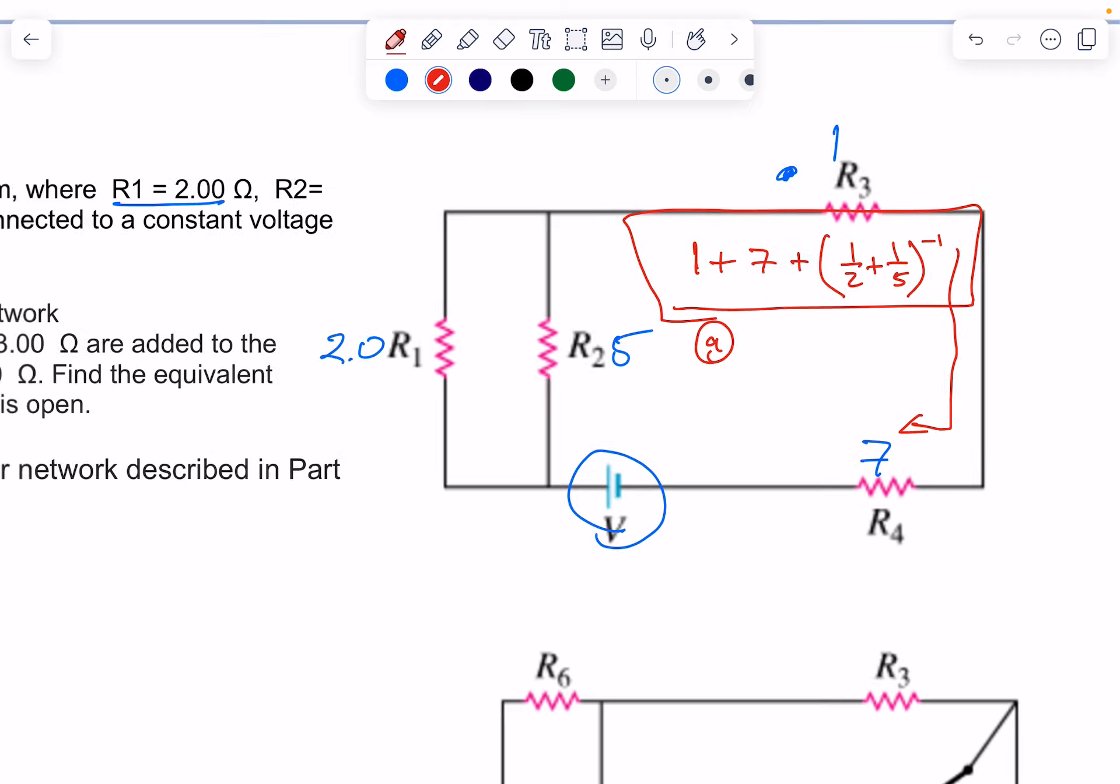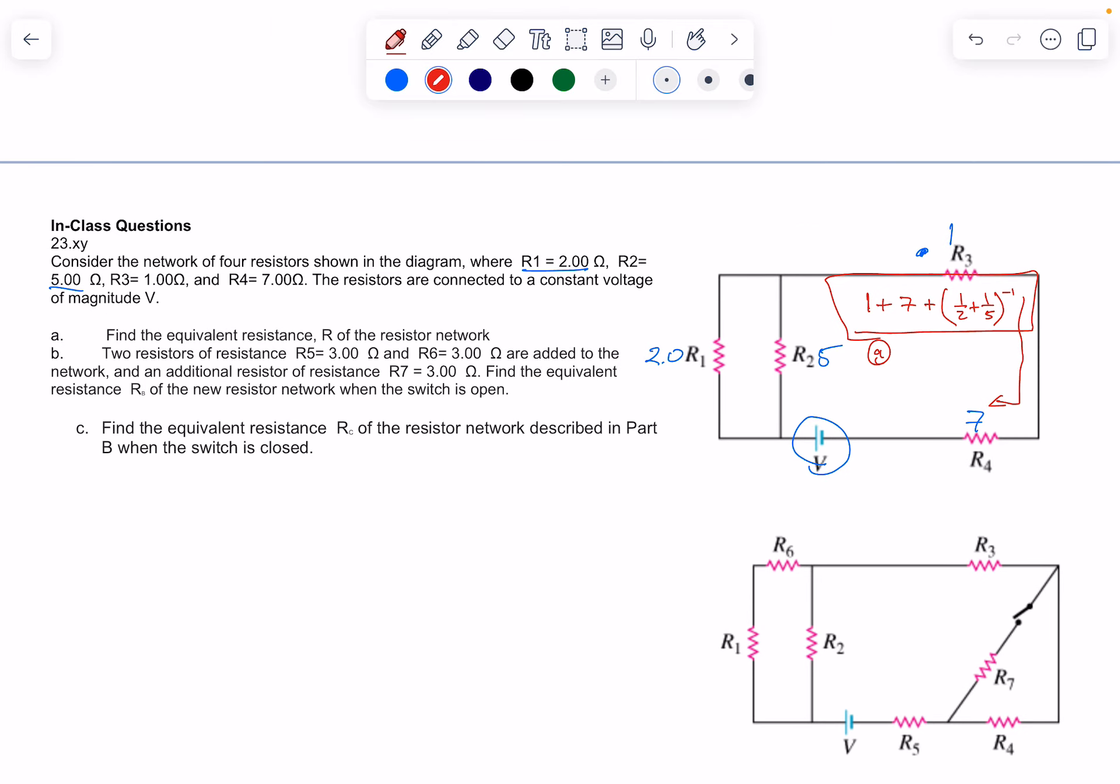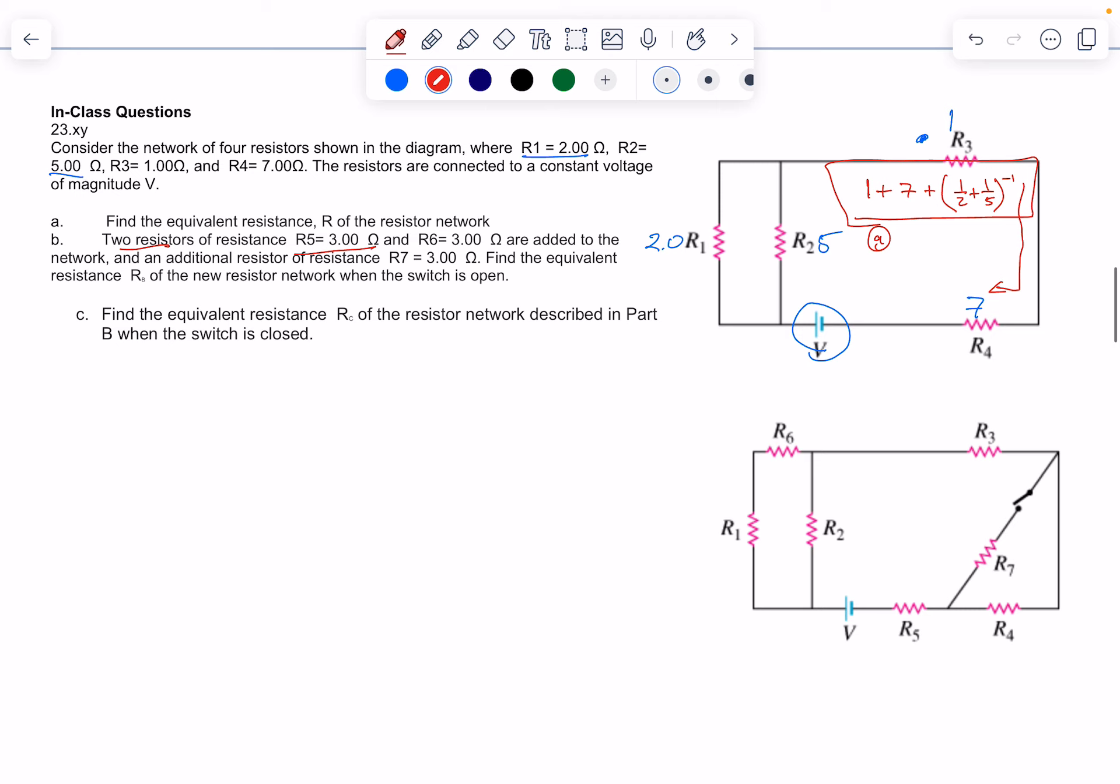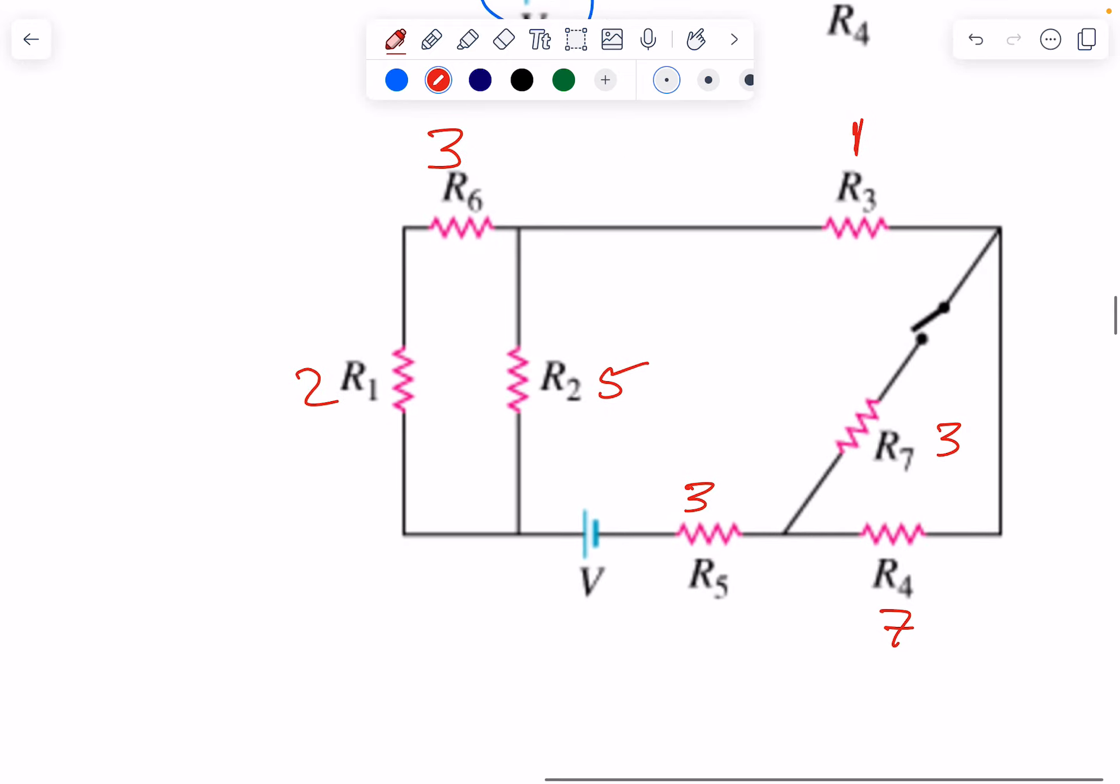Now question B: two resistors are added, R5 and R6. R5 is 3, R6 is 3, and we have R7 with a switch, which is also 3. R3 is still 1, R2 is still 5, R1 is 2, R4 is 7. We're trying to find the new resistance when the switch is open.